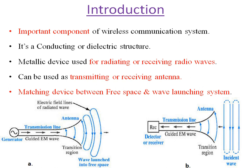So from this picture we come to know that the function of an antenna is to convert the signal from electrical to electromagnetic signal and radiate it at the transmitter side, and at the receiver side to take the electromagnetic signals from the media and convert them into electrical signals for further processing. It is a very important component of a wireless communication system. It is conducting or dielectric in nature — a metallic device used for radiating or receiving radio waves.